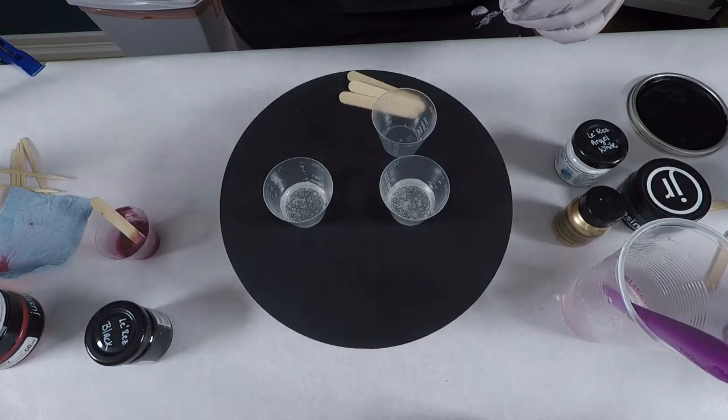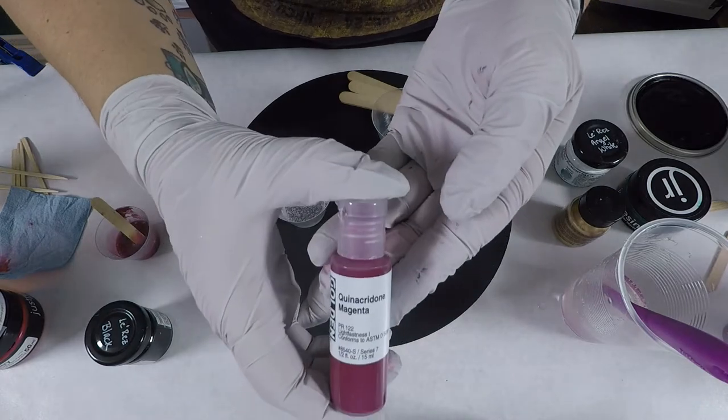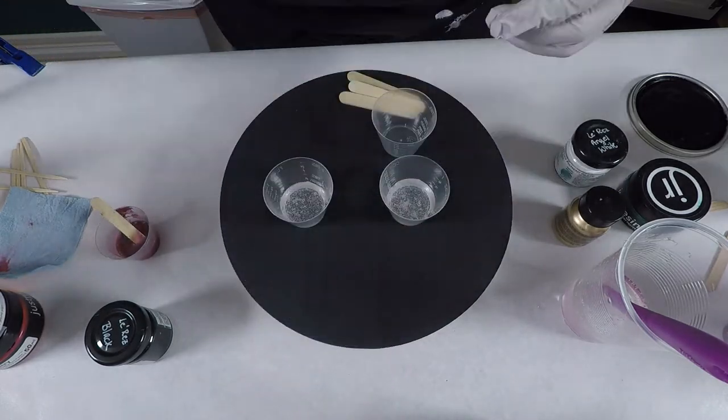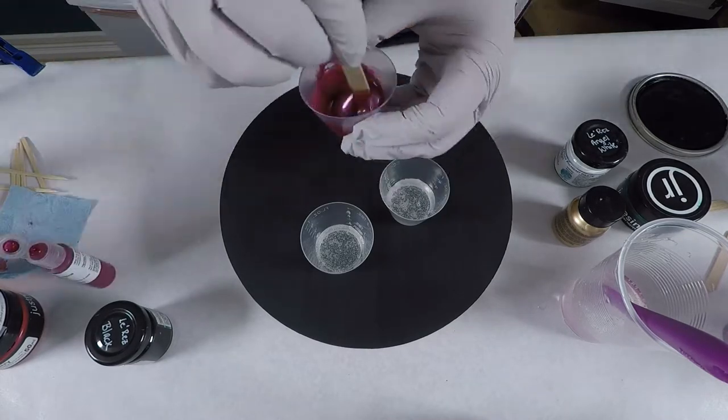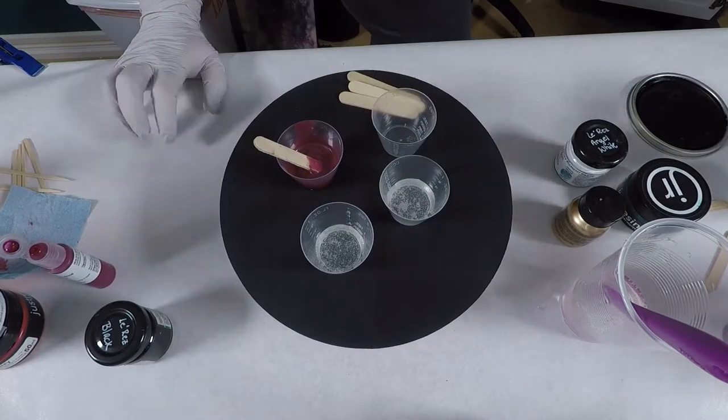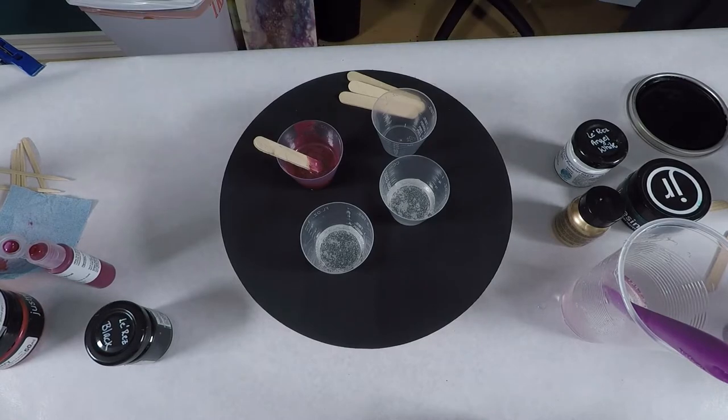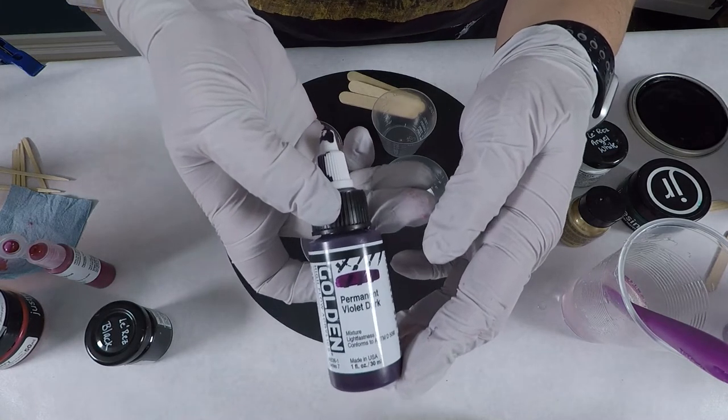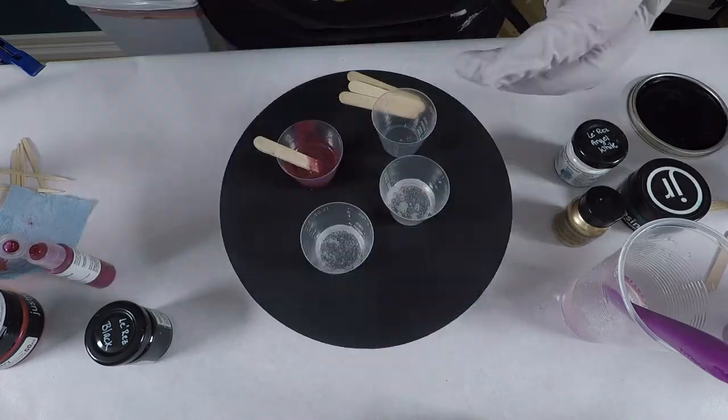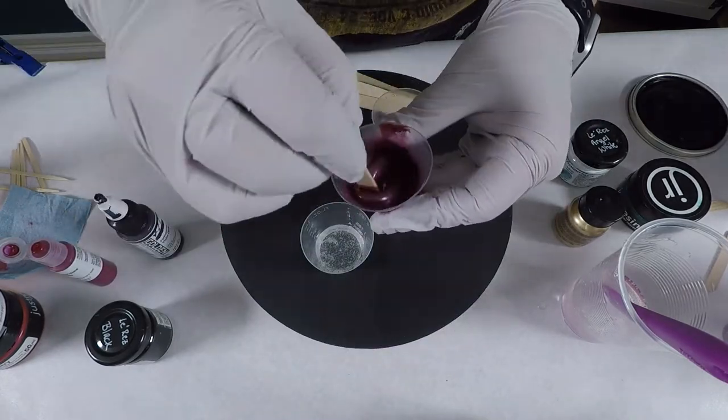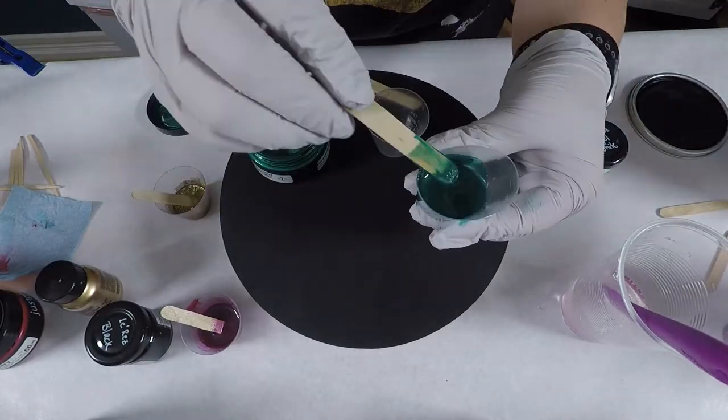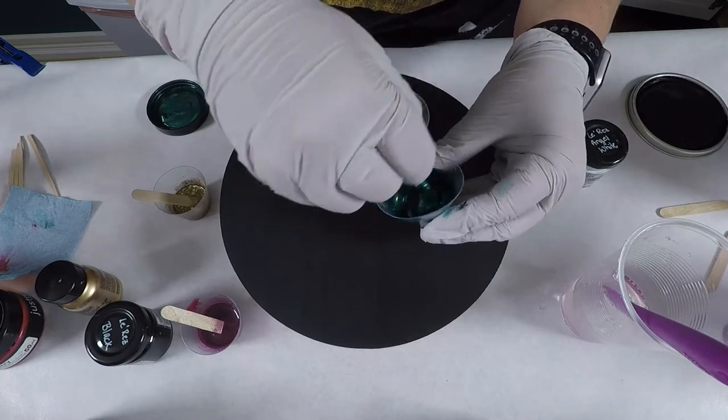And then with this color that I made, I wanted to change it just a little bit. So I grabbed some Golden High Flow Acrylic Magenta and I added just a drop. It's a water base, so you definitely don't want to add too much. It wasn't just right. So I also grabbed some High Flow Acrylic Permanent Violet Dark. Added a drop, mixed it up, added one more drop, and it was a color closer to what I was looking for. So I'll just get the rest of these mixed up here.